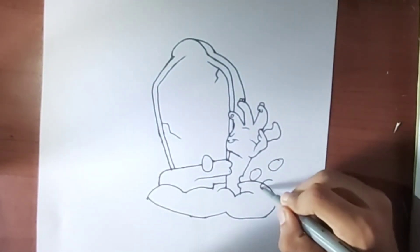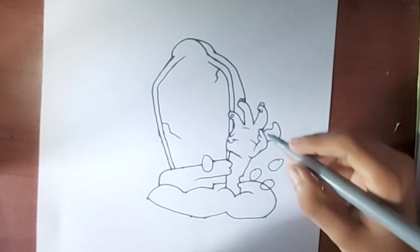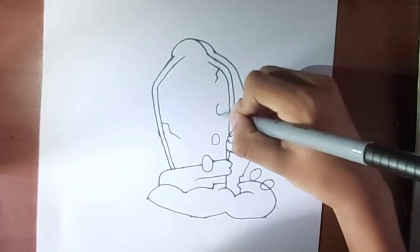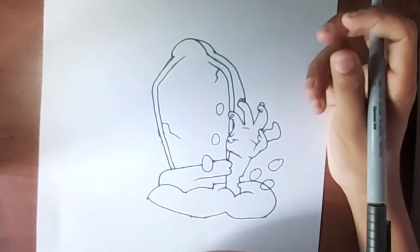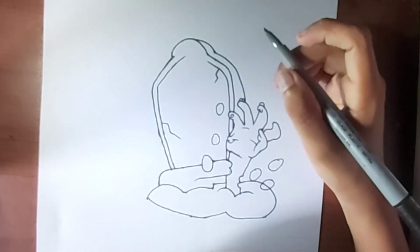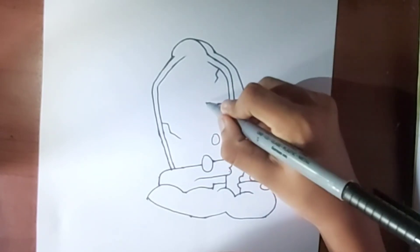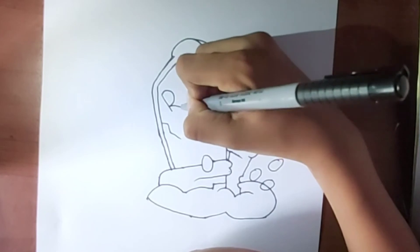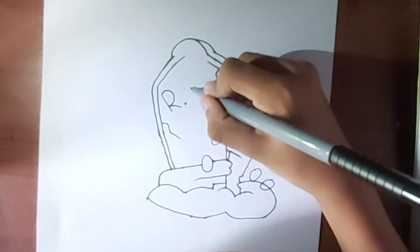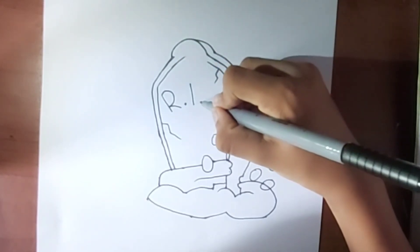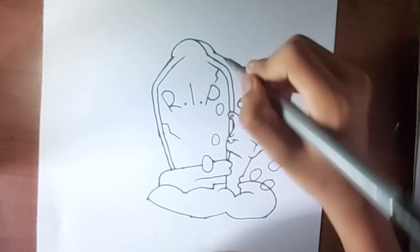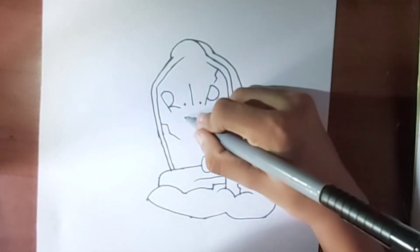Now we're going to draw some lights like this. Now let's draw R.I.P. over here on a straight line.